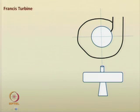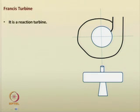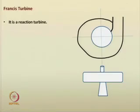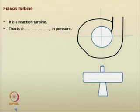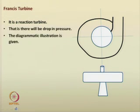The Francis turbine is a type of reaction turbine. Reaction turbines are turbines where pressure changes significantly from inlet to outlet, and energy is delivered to the device based on that change in pressure — there is a drop in pressure. A diagrammatic illustration has been briefly provided.